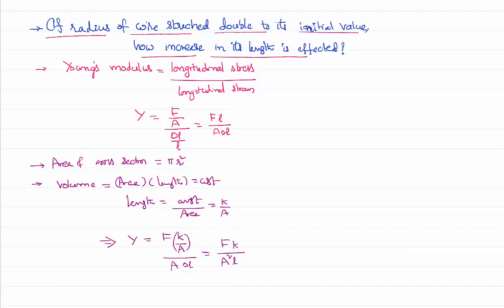By A squared times delta L. Substituting the value of the area of cross-section as something like pi r squared, I can write Young's modulus as force times some constant.